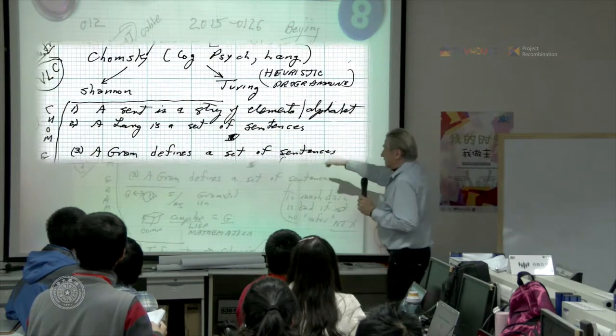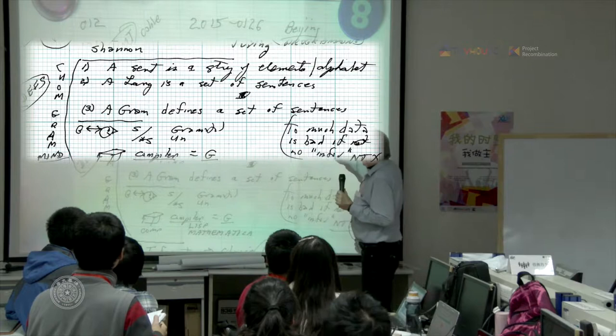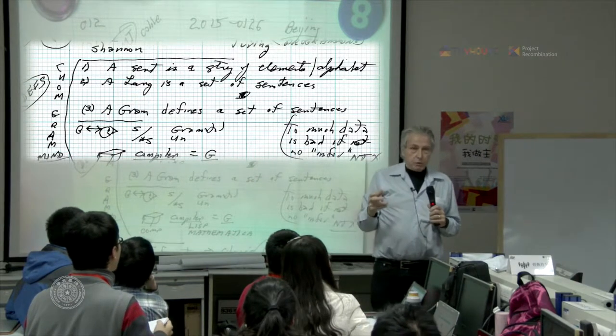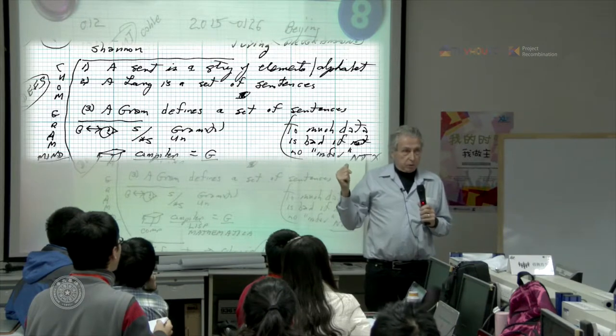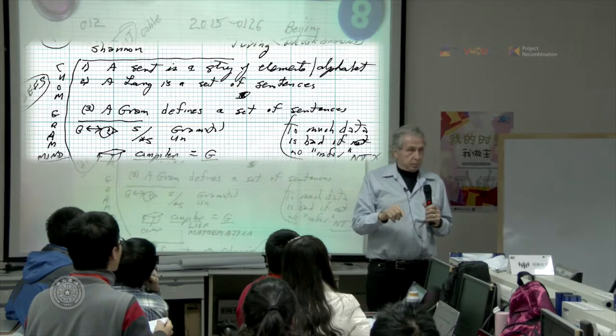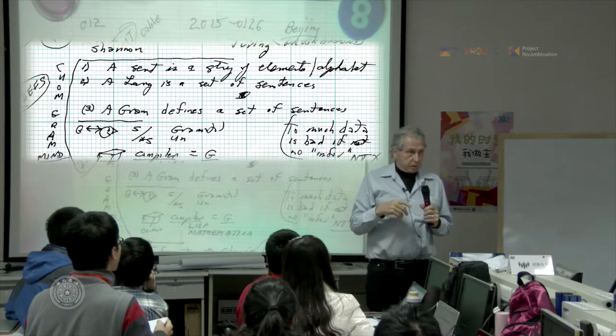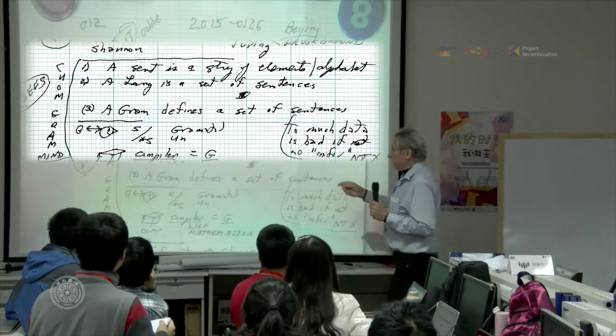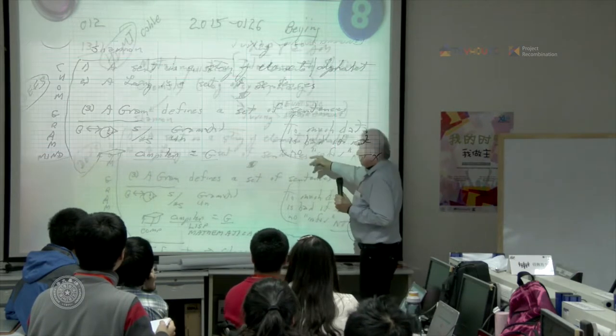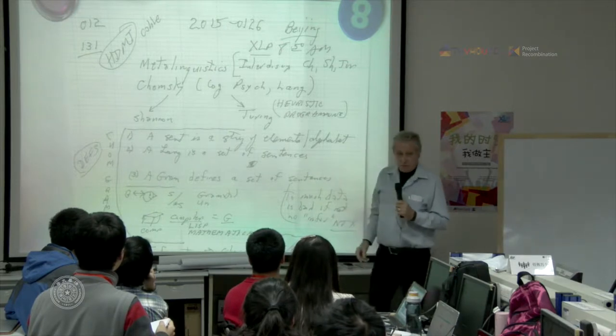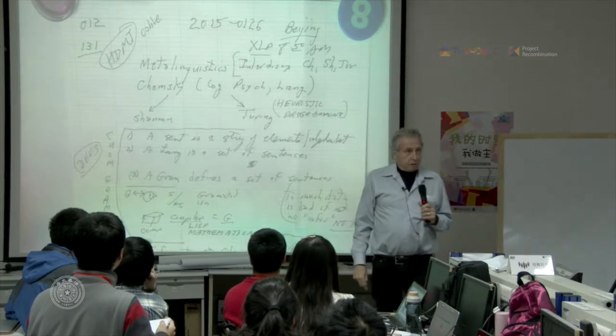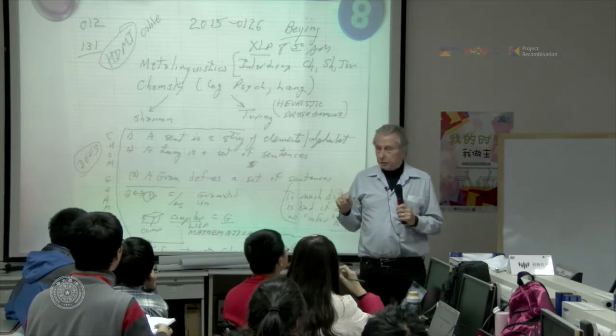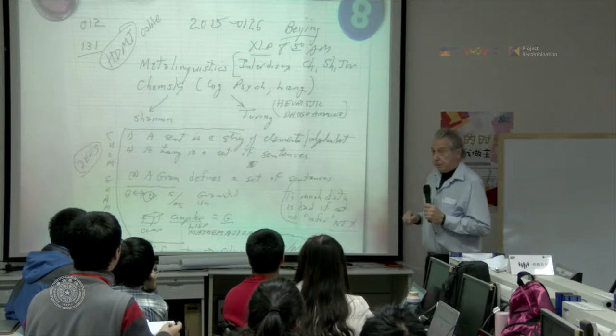One is that a sentence is a string of elements from an alphabet. Now, if you believe that, then every language in the world is a language in this sense because you could just type symbols on a typewriter. Some of the symbols you type will be very good sentences and other ones won't. But every language has sentences. Now a language is a set of sentences. That is, if you speak a language, you can decide which sentences are in the language and which ones aren't. And that's what it is to be a native speaker.